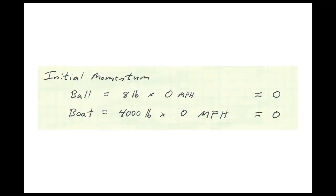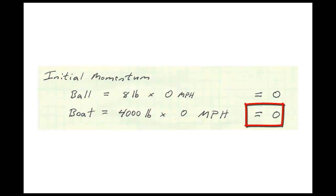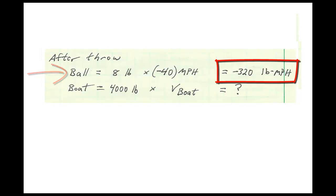Now we'll see how much momentum we start with. Initially, when I'm standing in the back of the boat staring at the ball floating in the water, the ball weighs 8 pounds and is moving at 0 miles per hour, so it has zero momentum. The boat weighs 4,000 pounds and is also moving at 0 miles per hour, so it also has zero momentum. After I throw the ball off the back of the boat, the ball still weighs 8 pounds, but it's moving at minus 40 miles per hour, so its momentum is minus 320 pounds-mass miles per hour.